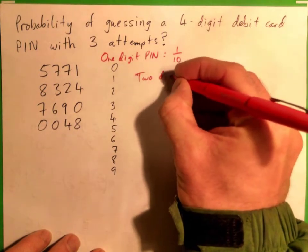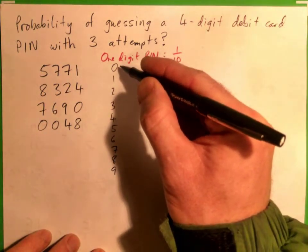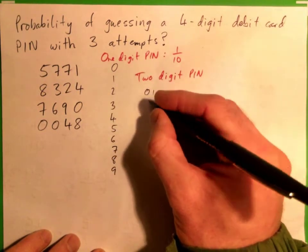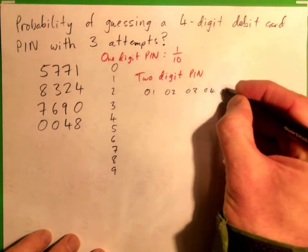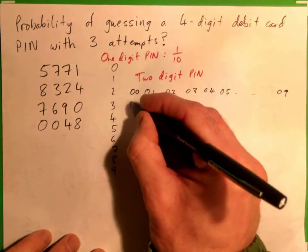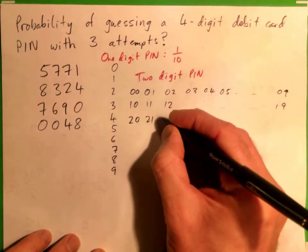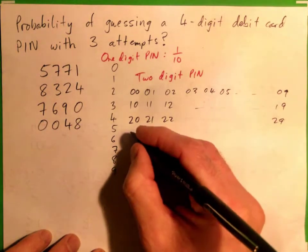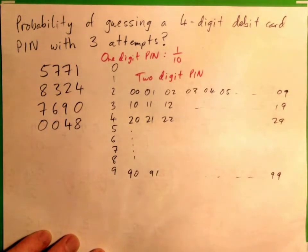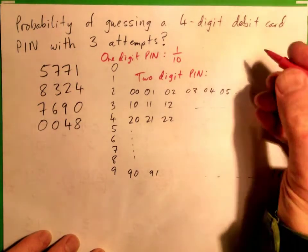How about a two-digit PIN? The first number could be zero through nine, and the next number could also be zero through nine. So it could be 00, 01, 02, all the way up to 09, then 10, 11, 12 up to 19, then 20, 21, 22 up to 29, and on and on until you end up with 90, 91, all the way up to 99. So there are 100 ways of guessing the two-digit PIN, meaning the probability is one out of 100.